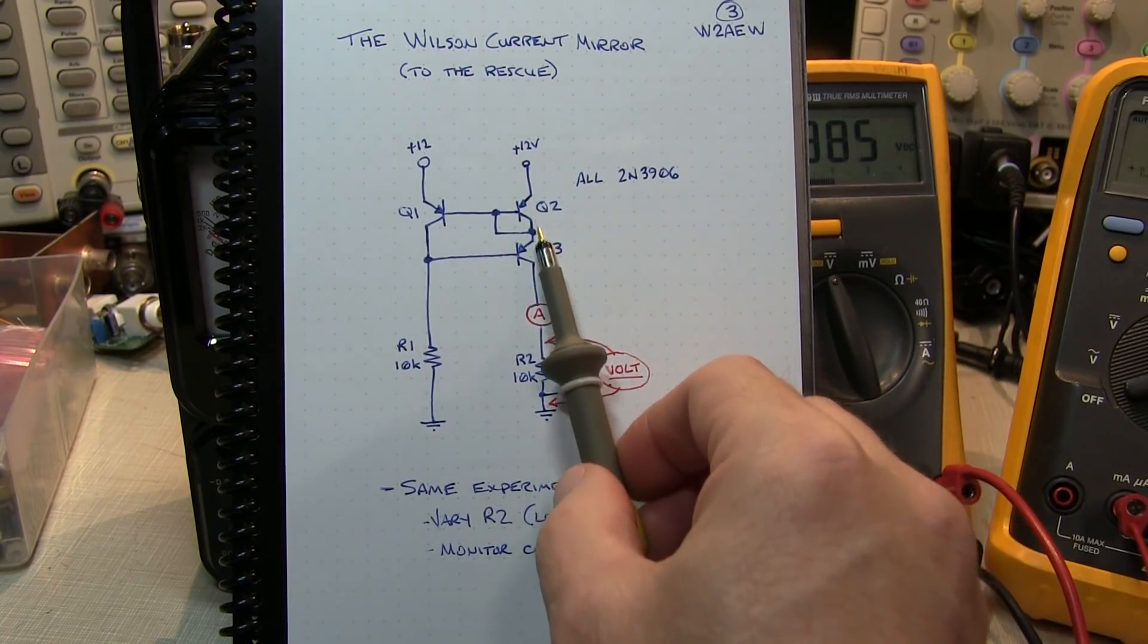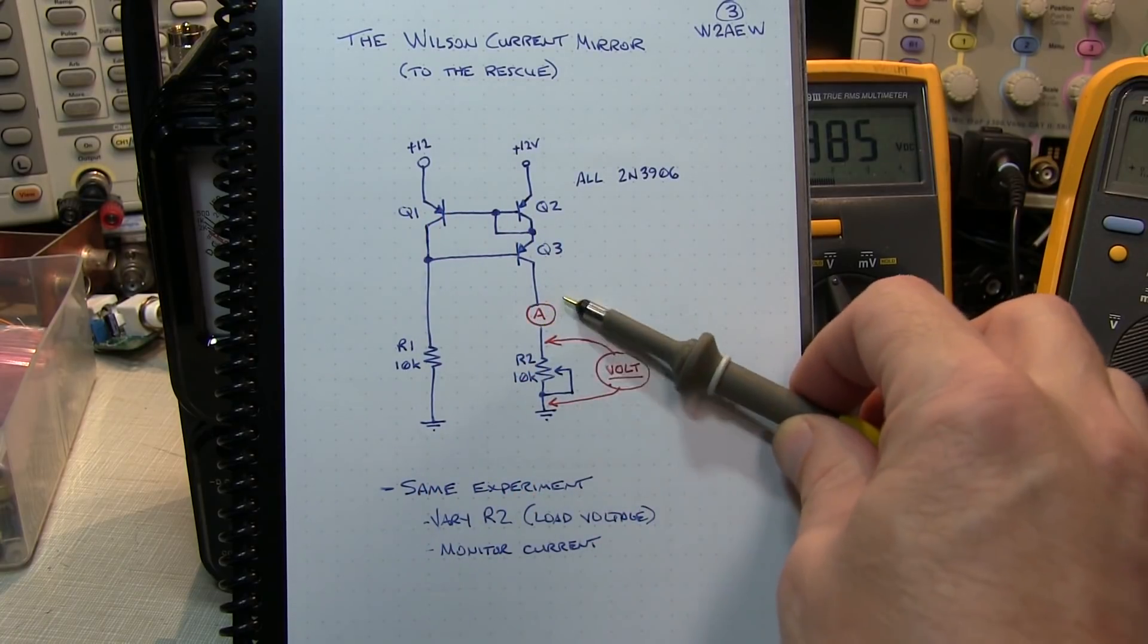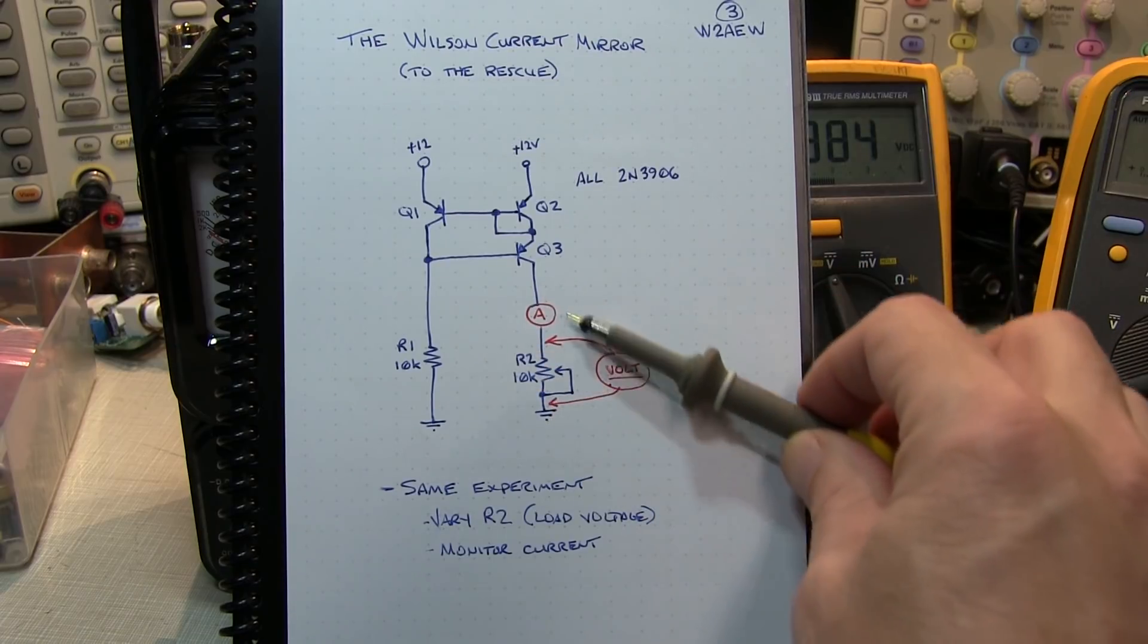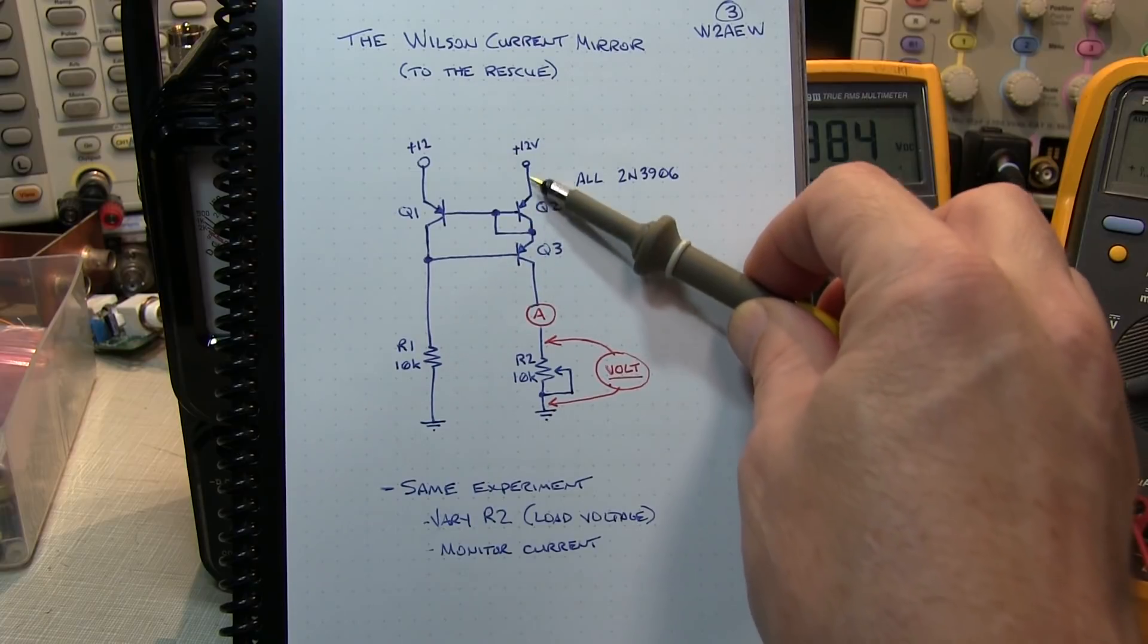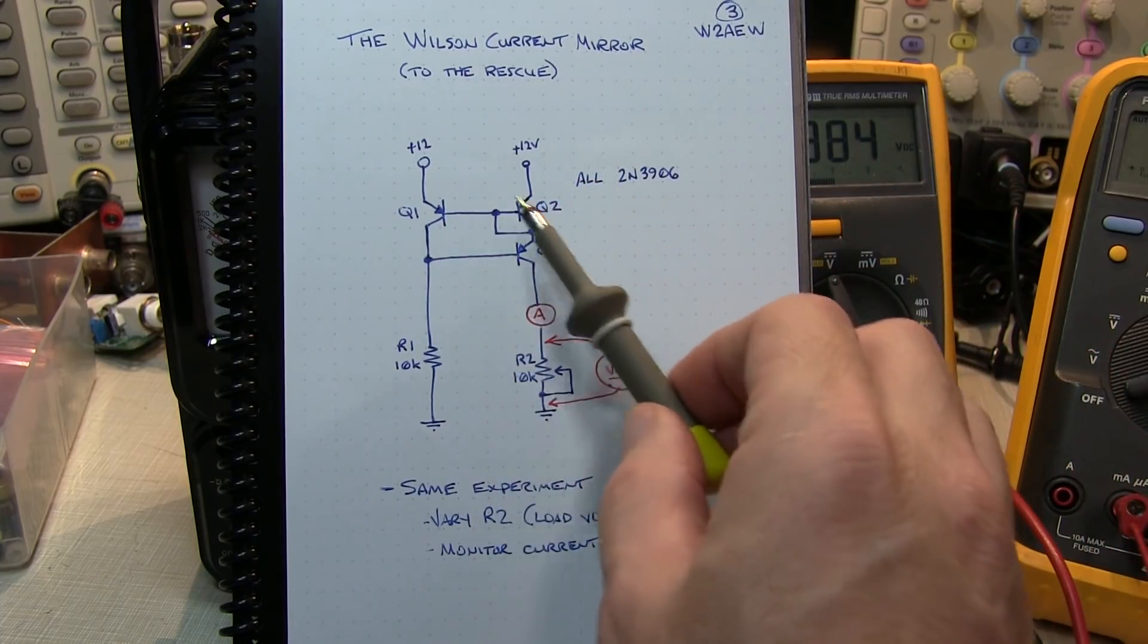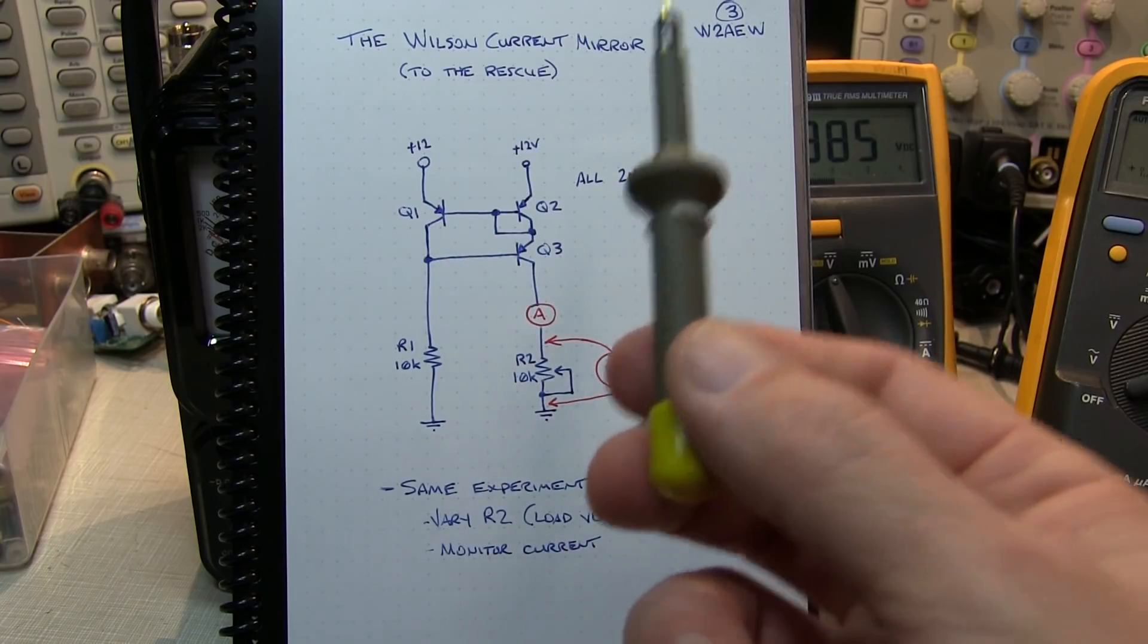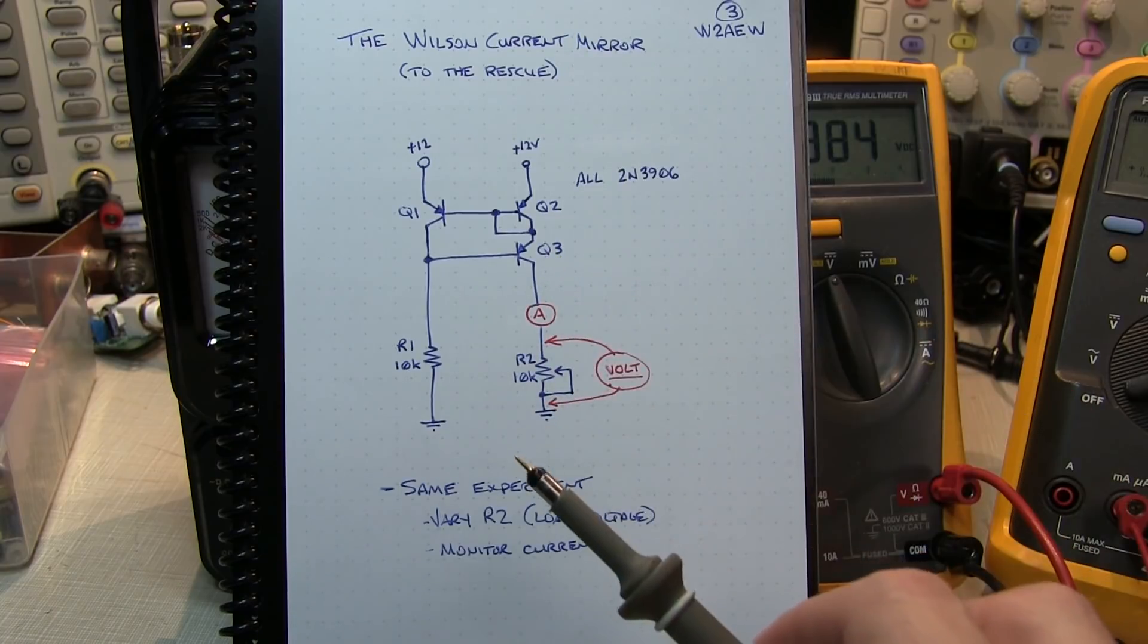The current flowing through Q3 is really set up by the currents that are in Q1 and Q2. So regardless of what I do to the load here, the Q3 collector current really can't change because it's essentially just passing through the Q2 collector current. Therefore, the transistors that are actually setting the constant current are not going to be affected by the output impedance of Q3. Q3 is always going to provide that same current.